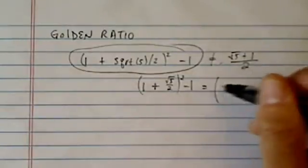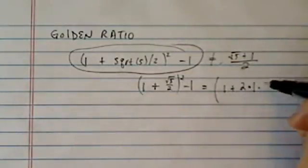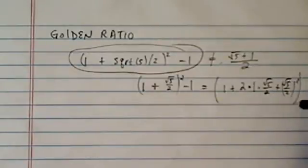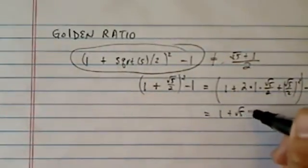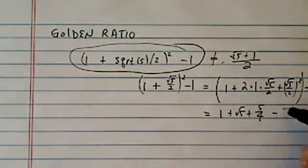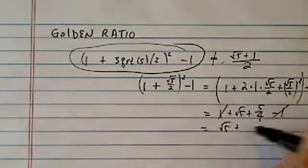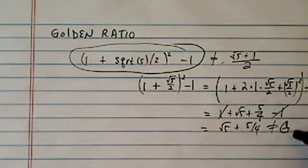We're going to expand it out. You have 1 plus twice 1 times radical 5. I'm just using the square root expansion, minus 1. And then you have 1 plus radical 5, plus 5 over 4, minus 1. As you can tell, this one is actually radical 5 plus 5 over 4. And this is not, I'm just going to say, golden ratio here.